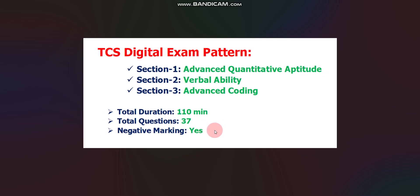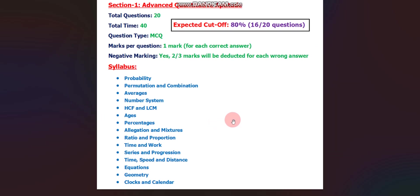Section one is Advanced Quantitative Aptitude. There will be a total of 20 questions and you need to solve them in 40 minutes. Question type will be MCQ. For each correct answer you will get 1 mark, and for each incorrect answer they will deduct 2/3 marks, which is 0.67 marks. The expected cutoff will be 80%, meaning you need to solve 16 questions correctly out of 20. Please note every section is an elimination round in TCS Digital.